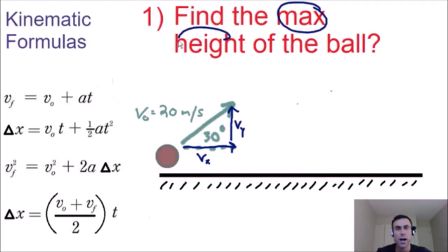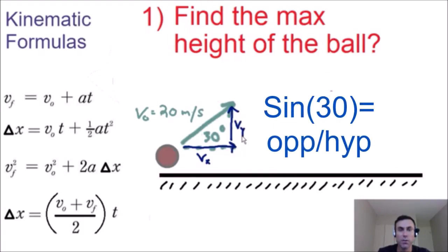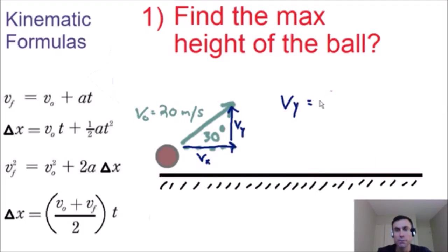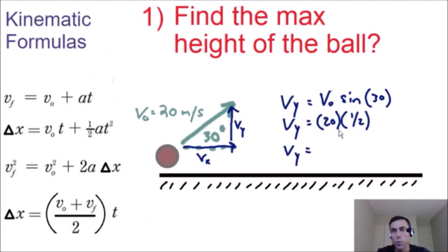We're trying to find the max height of the ball, and the only thing we really need is the velocity in the y direction. We're going to use our trig function SOHCAHTOA to find it. The sine of 30 equals opposite over hypotenuse, so the velocity in the y direction equals 20 meters per second times sine of 30 degrees. Sine of 30 is one-half, so our vertical velocity is 20 times one-half, which equals 10 meters per second.